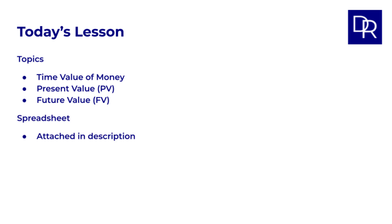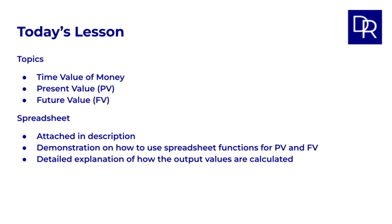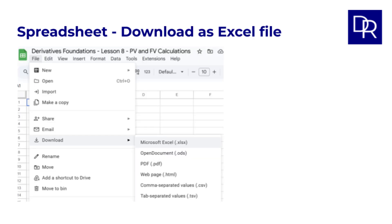To make this practical I've attached a link to a spreadsheet in the description below. I'll be showing you how to use the spreadsheet functions for PV and FV for single cash flows. We won't just plug in some numbers, we'll check the outputs by using the relevant formulas. This is a Google Sheets file which anyone should be able to access. If you prefer Excel, you can download the sheet as an Excel file as shown here.